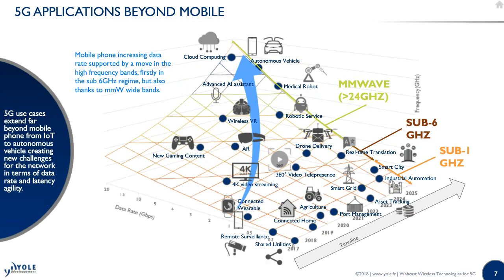Among all the 5G applications, there are applications beyond mobile. For instance, IoT applications for connected homes, agriculture, and industrial automation. The arrival of VR and AR applications as well, robotic services, intelligent transport systems such as autonomous vehicles.